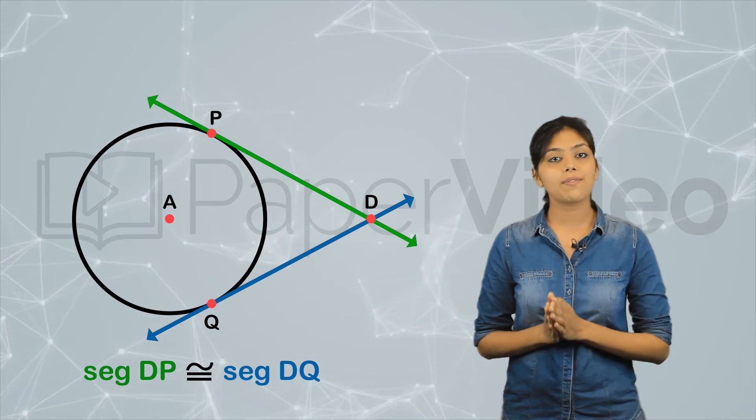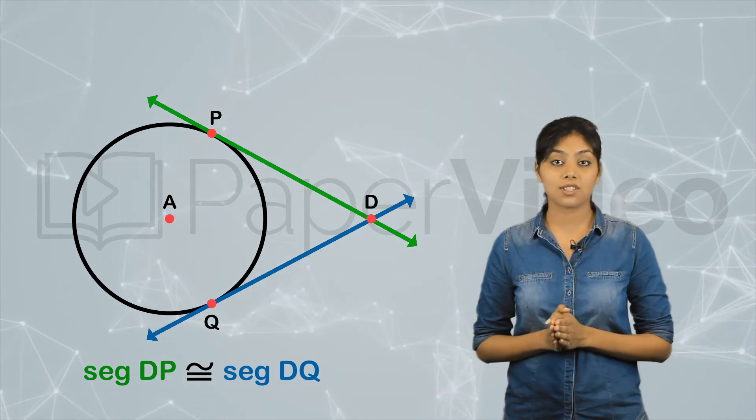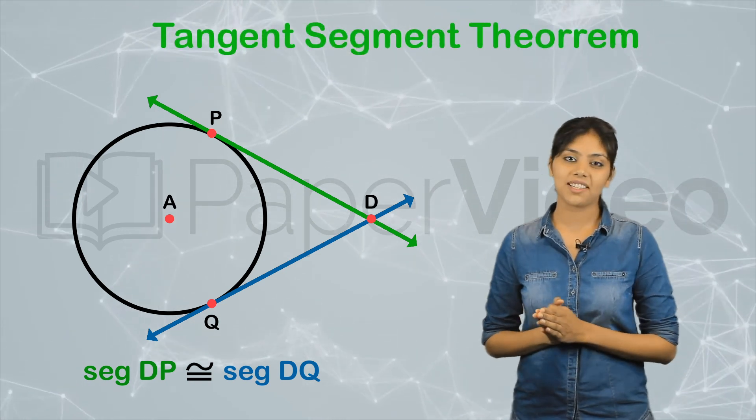This theorem holds true for every pair of tangents to the circle from an external point and is known as the tangent segment theorem.